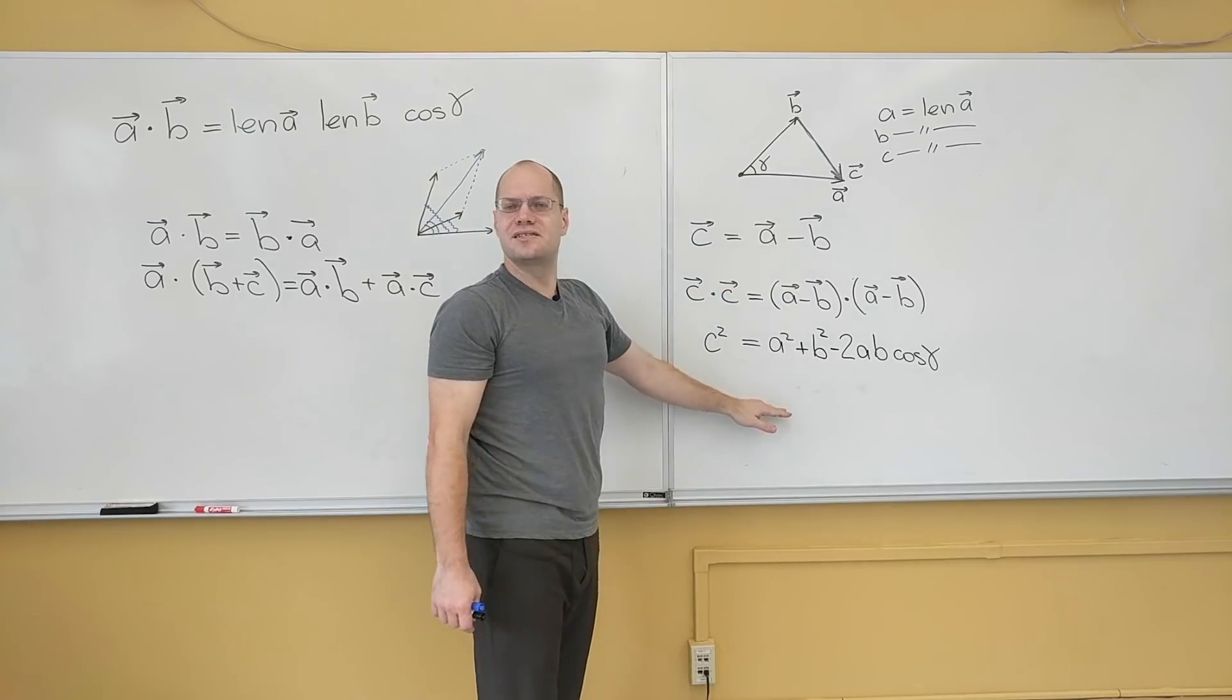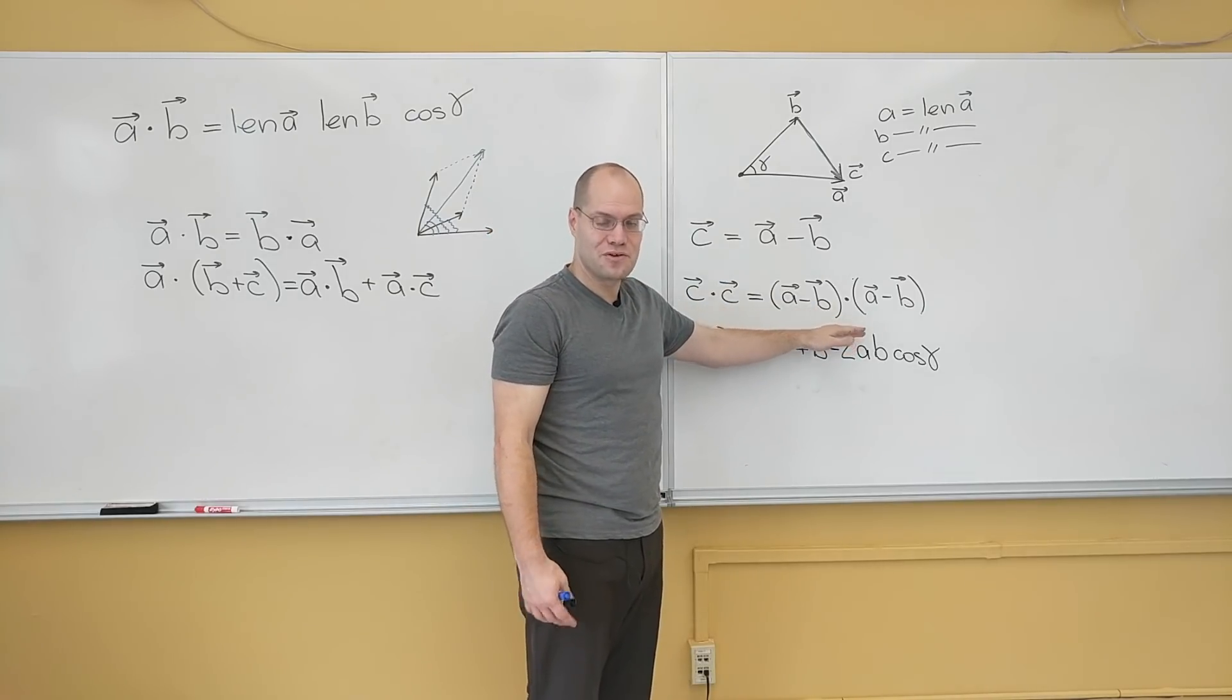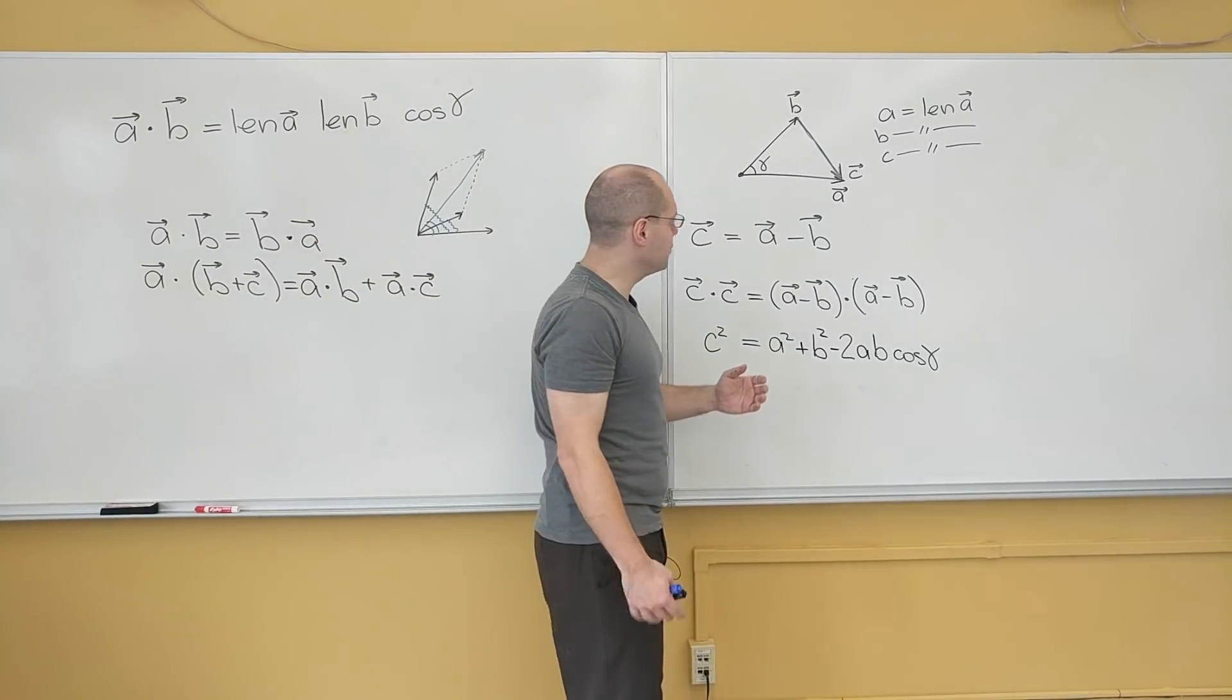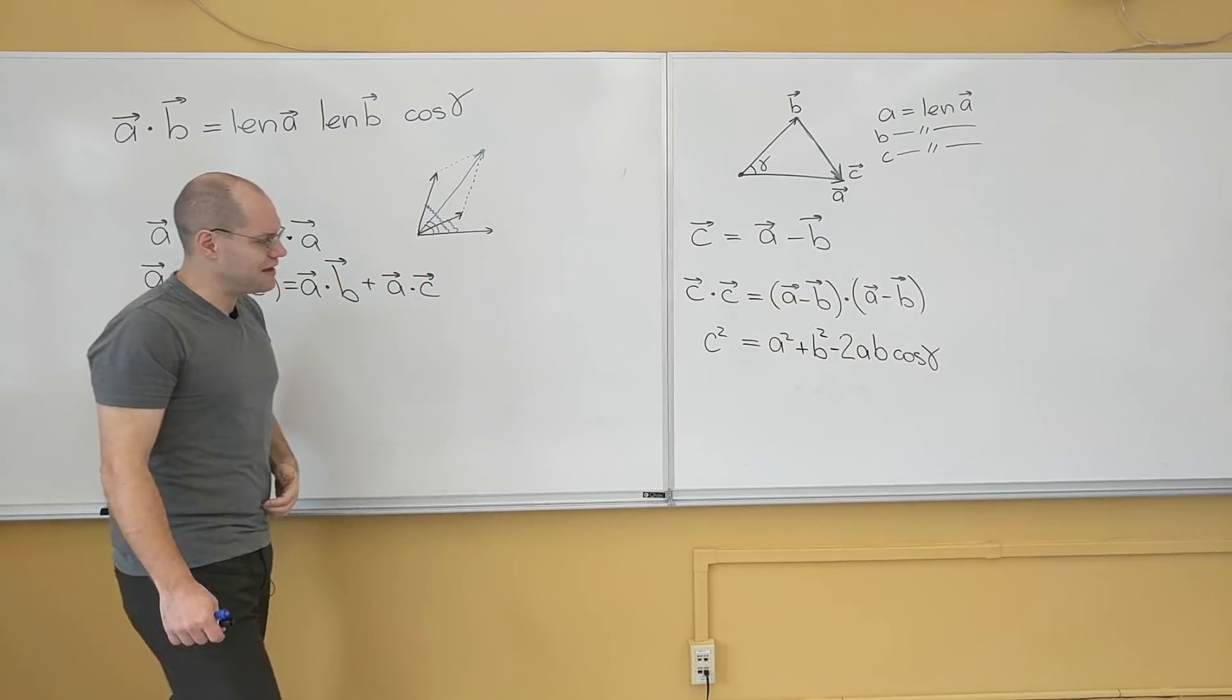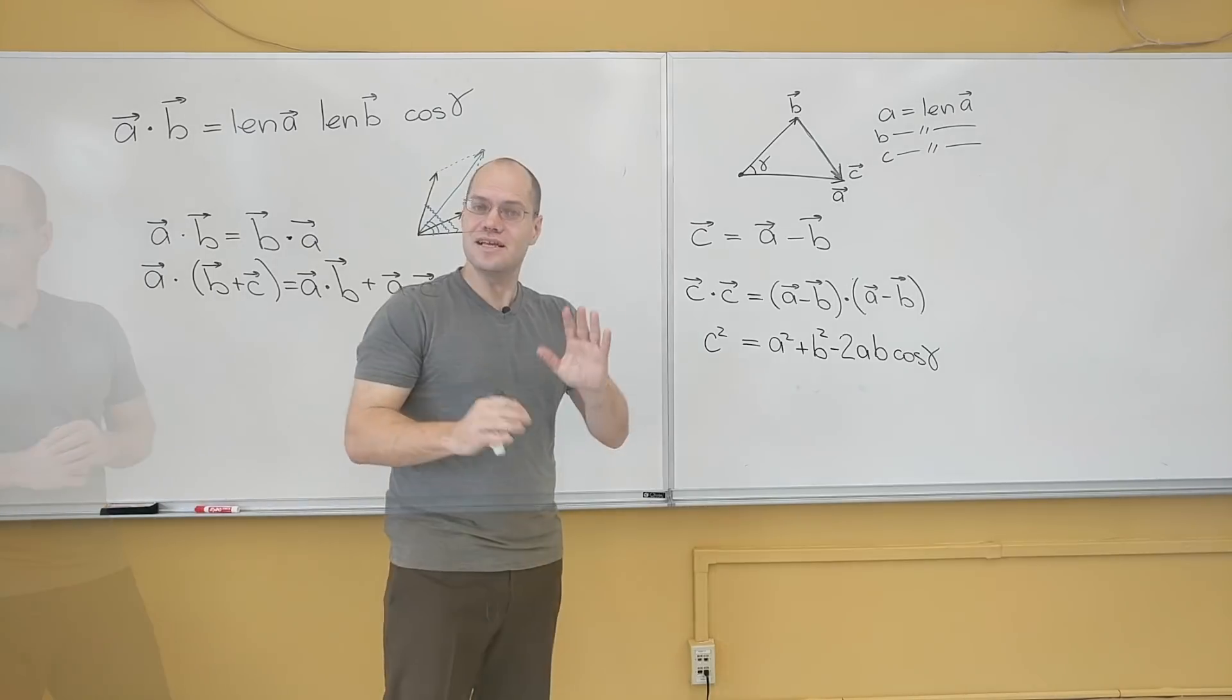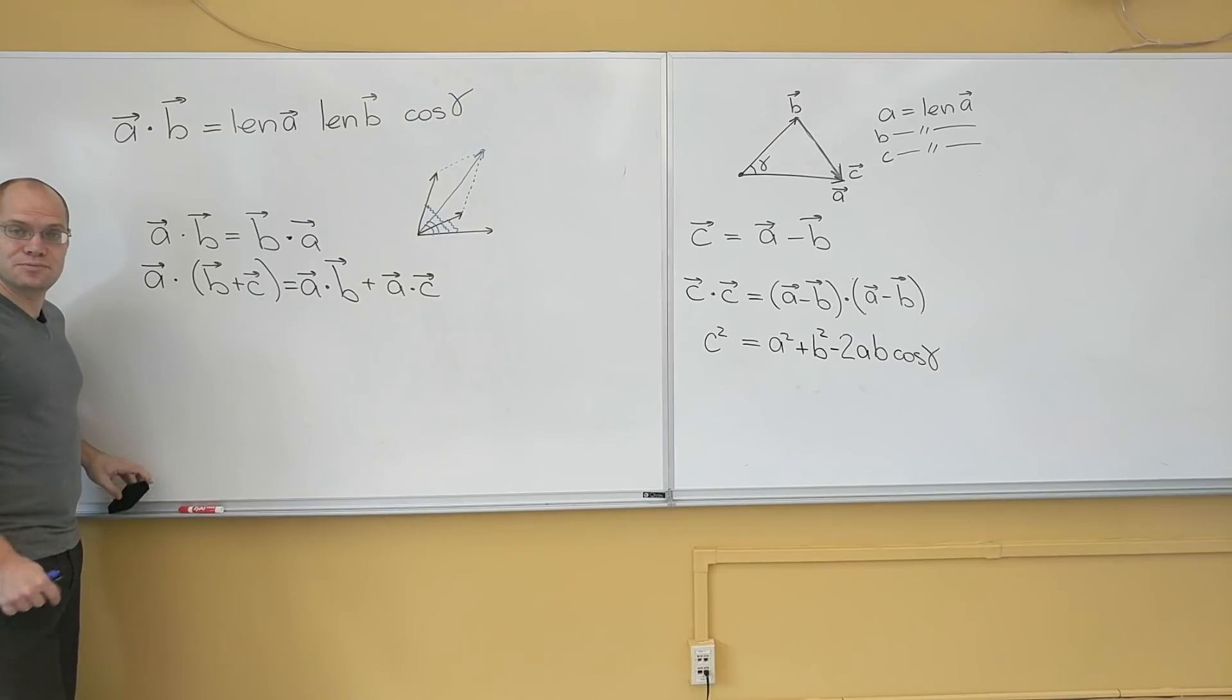So until we prove this, this proof is completely invalid. Because we use the distributive property, which we haven't yet established. And maybe the proof of the distributive property requires the law of cosines. In which case, that's not a valid proof at all. So we have to be careful. Let's prove the distributive property since we're at it.